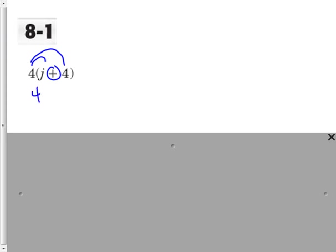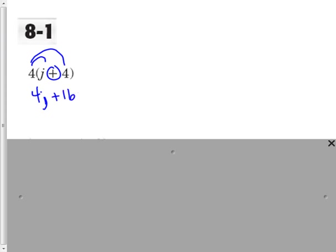In 8-1 we were working on the distributive property, so 4 times j and 4 times 4. Notice the symbol is going to stay the same. We changed everything to addition in this lesson, so we're going to go 4 times j plus 4 times 4 is 16, and this is the simplified expression.